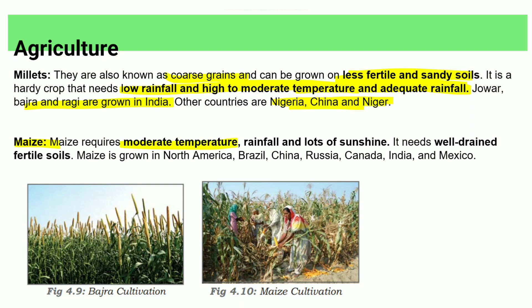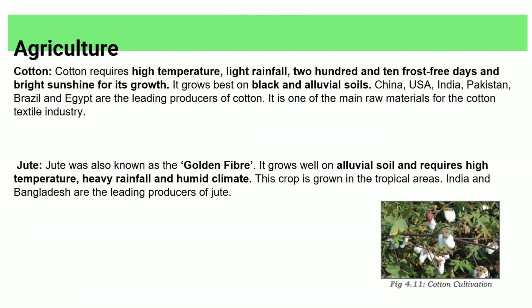Maize requires moderate temperature and rainfall with good sunshine and well-drained fertile soil. Leading producers include North America, China, India, and Mexico. Cotton requires high temperature, light rainfall, about 210 frost-free days, and bright sunshine. Black soil is suitable. It is cultivated in North India, China, and Pakistan, and is a main raw material for the cotton textile industry.